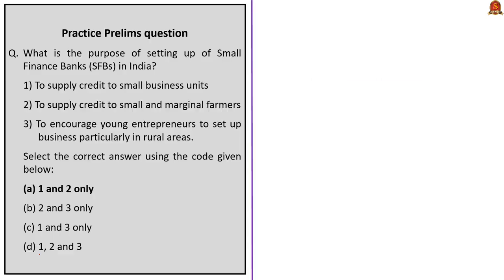With this basic understanding, let us go and solve the MCQ. It asked about the purpose of setting up of small finance banks. The first statement — to supply credit to small business units — is correct. The second statement — credit to small and marginal farmers — is also correct. The third statement — it encourages young entrepreneurs to set up business particularly in rural areas — may look correct, but it is not the main aim of setting up SFBs. So the correct option is option A.